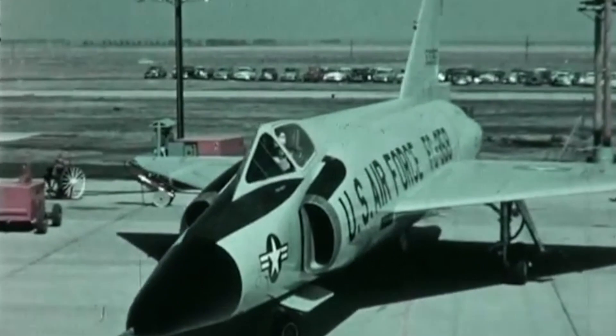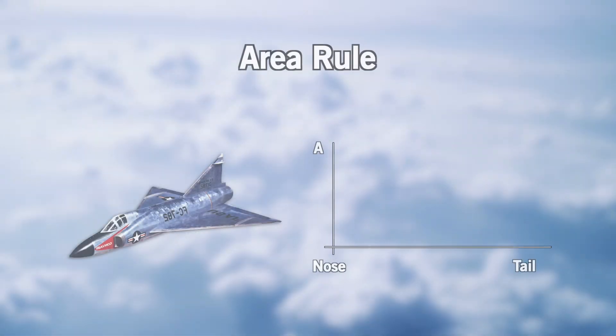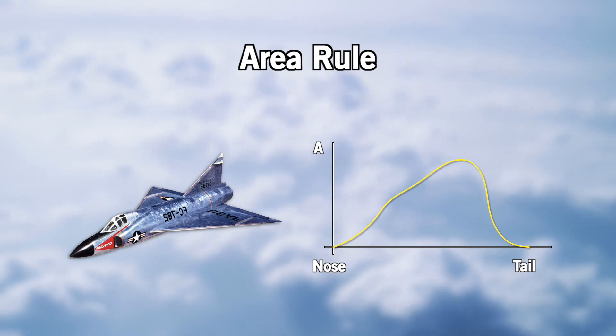Let's use the first version of the F-102 as an example. If we measure the cross-sectional area of the fighter from the nose to the tail, we obtain this graph. As you can see, there is a steep drop in the area after the middle section of the plane. This sudden change in area is what maximizes wave drag.